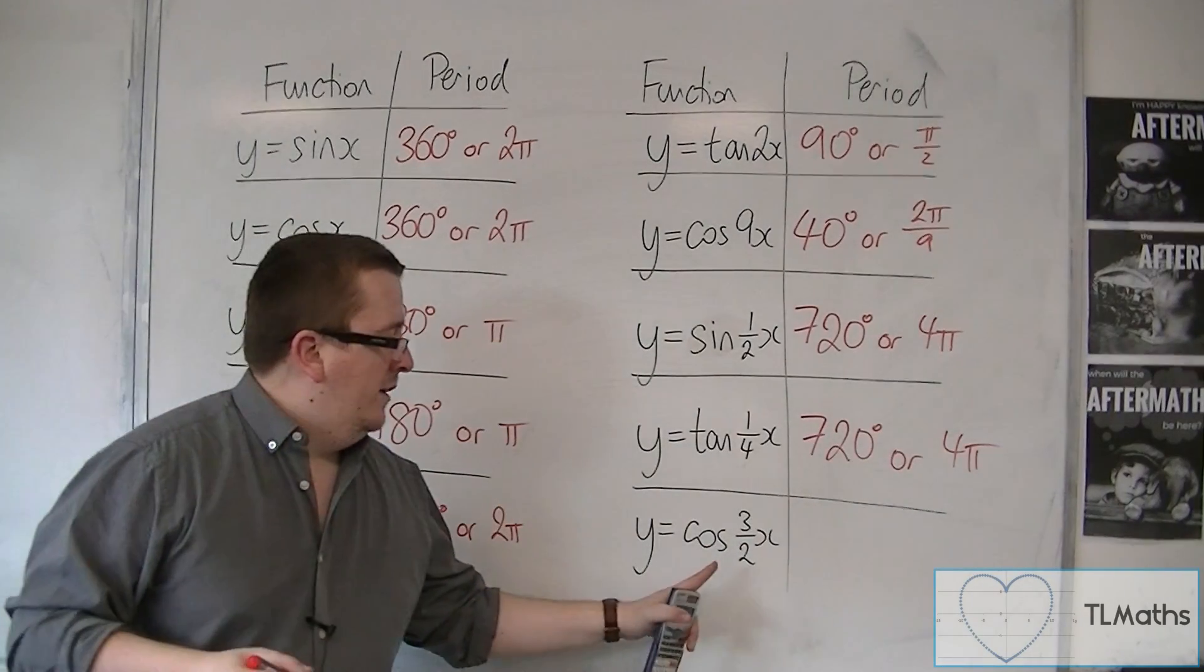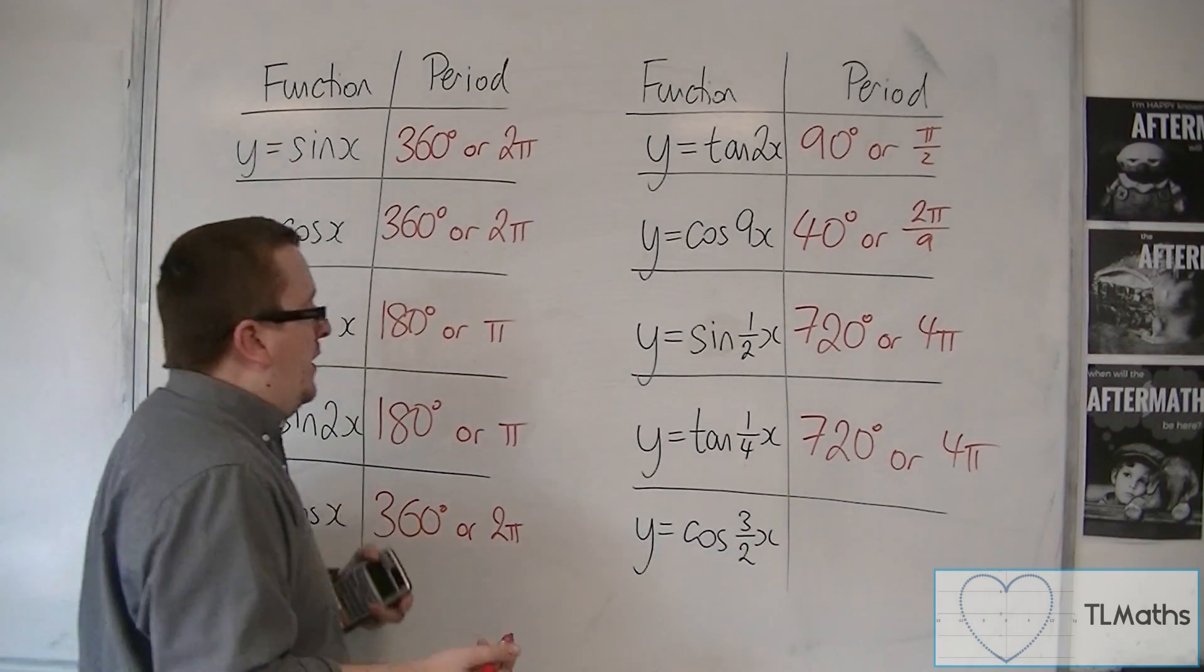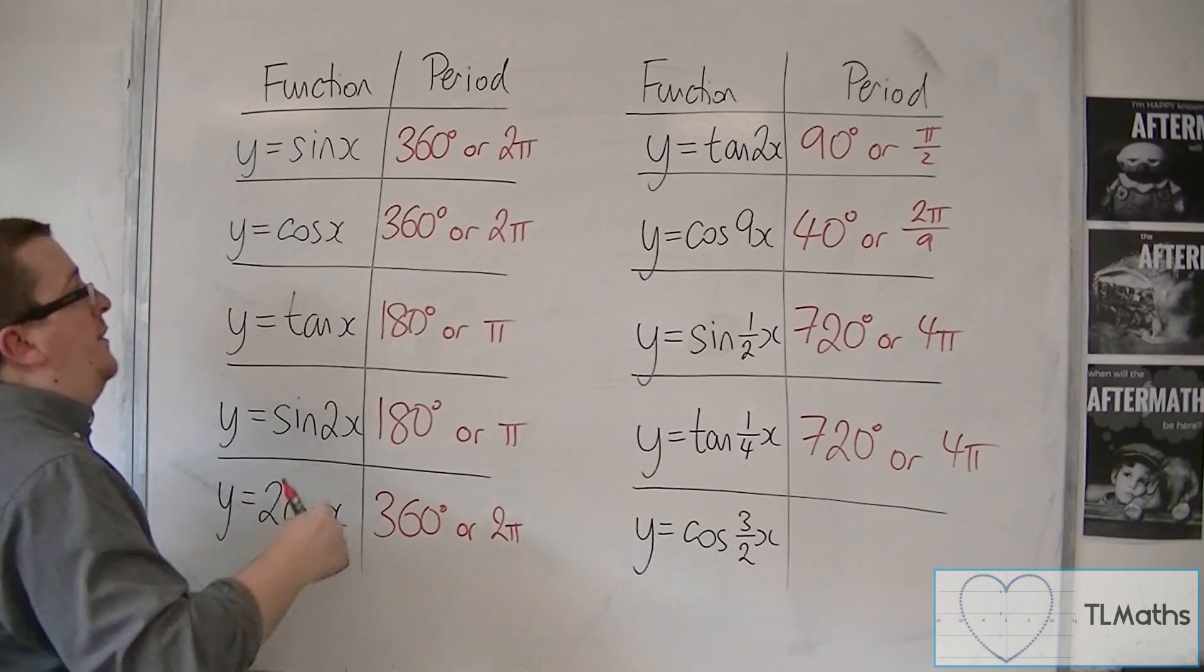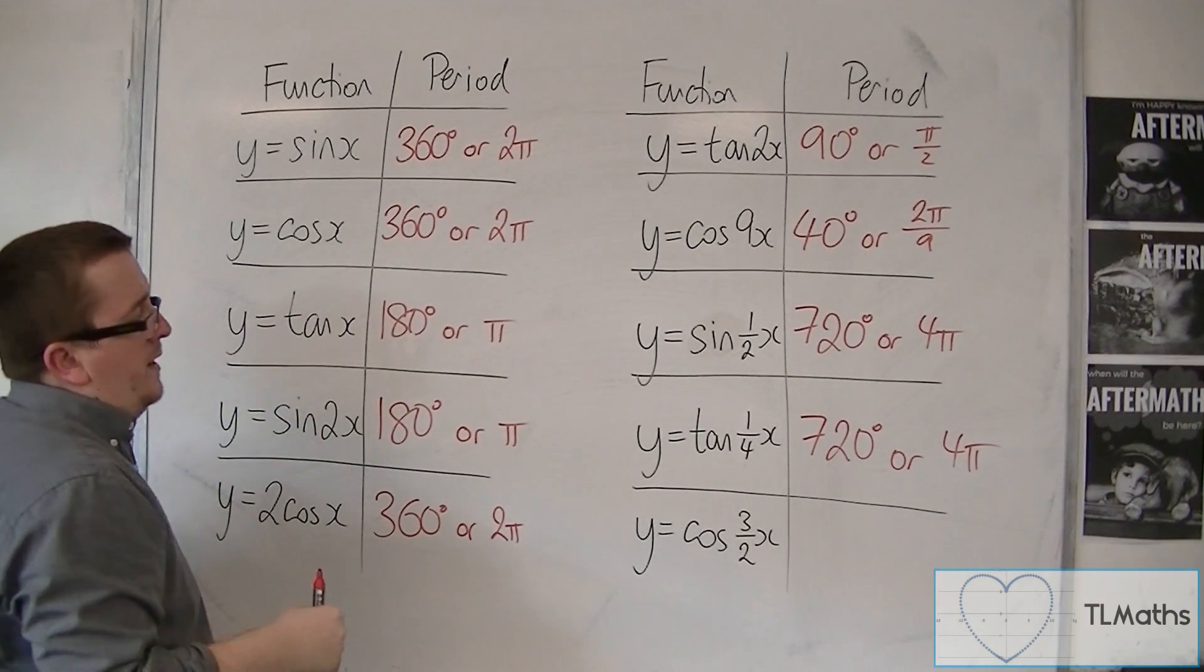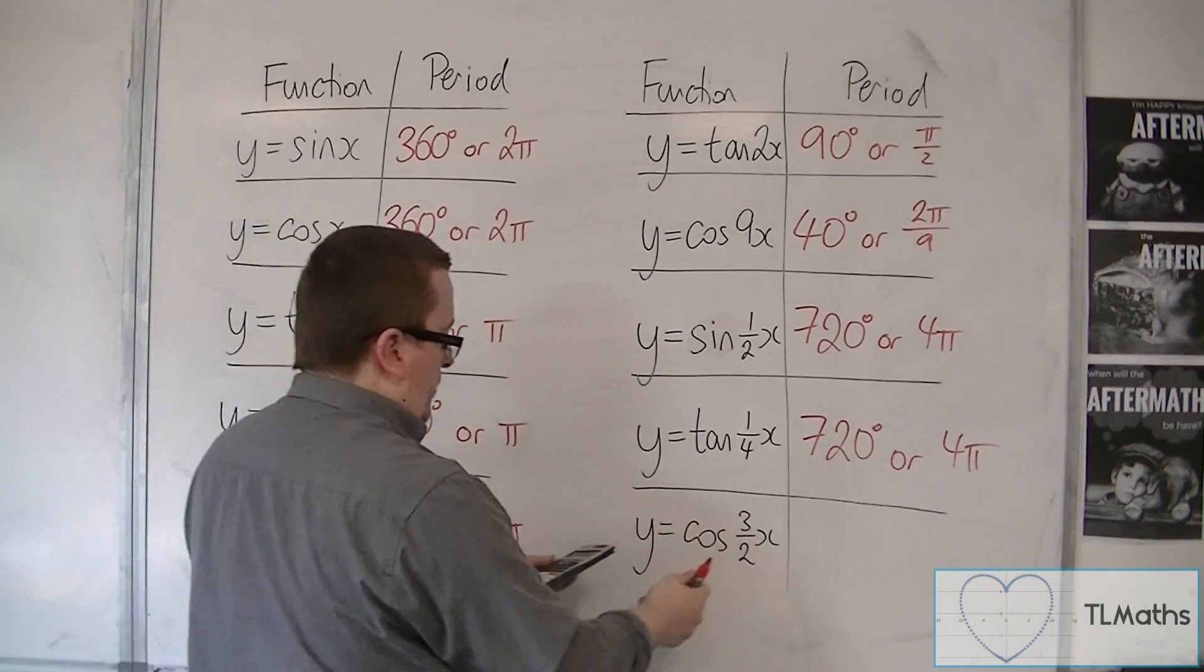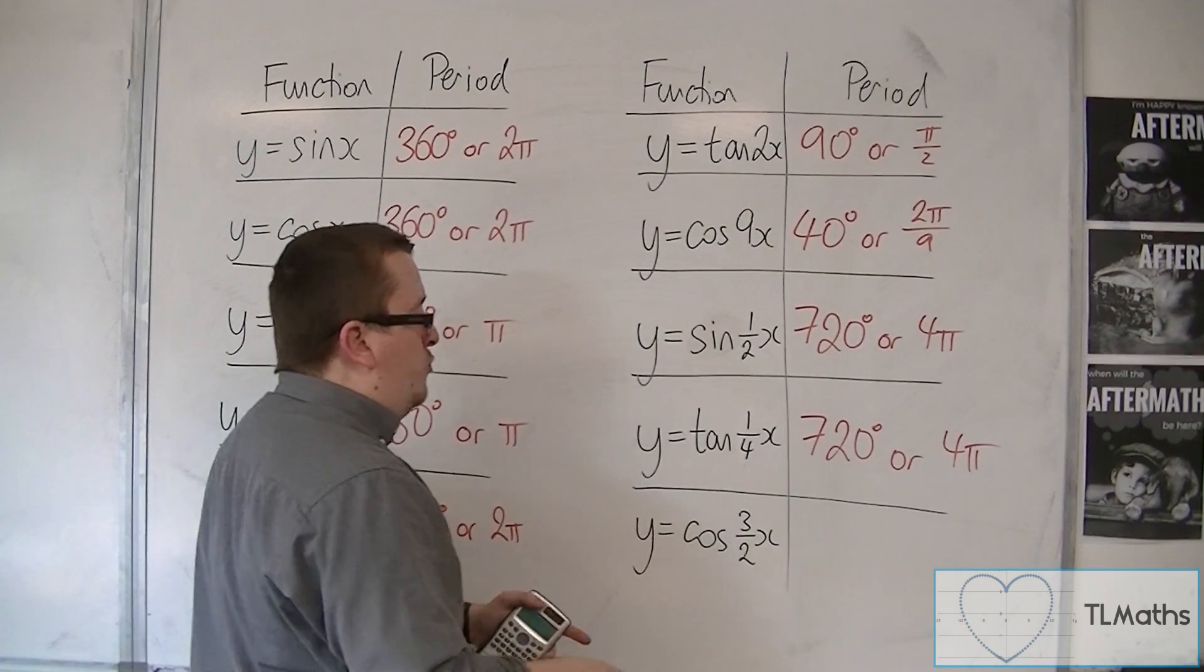And last but not least, y is equal to cos of 3 halves x. So in this case, the period of cosine is 360 or 2 pi, so 360 divided by the 3 halves gets you 240 degrees.